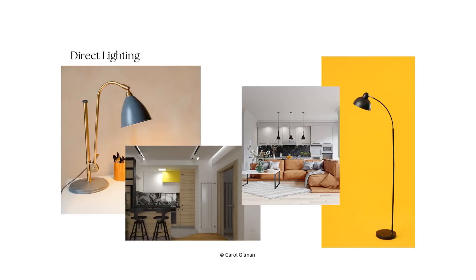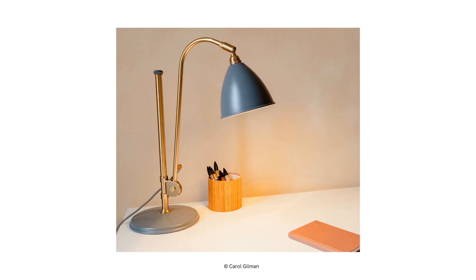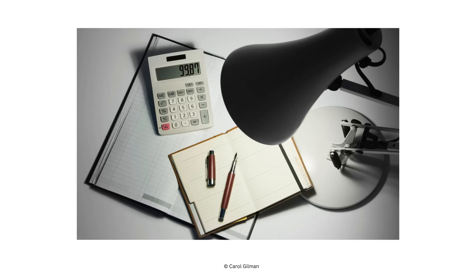The other type of lighting we're discussing is direct lighting. The word 'direct' describes it well — the light fixture, shade, and possibly the bulb itself direct that light onto a certain area, really focusing the light beam. A good example is a task lamp or desk lamp where you need to focus in on something to read, do artwork, or sewing — something very task-oriented where you need to see clearly.